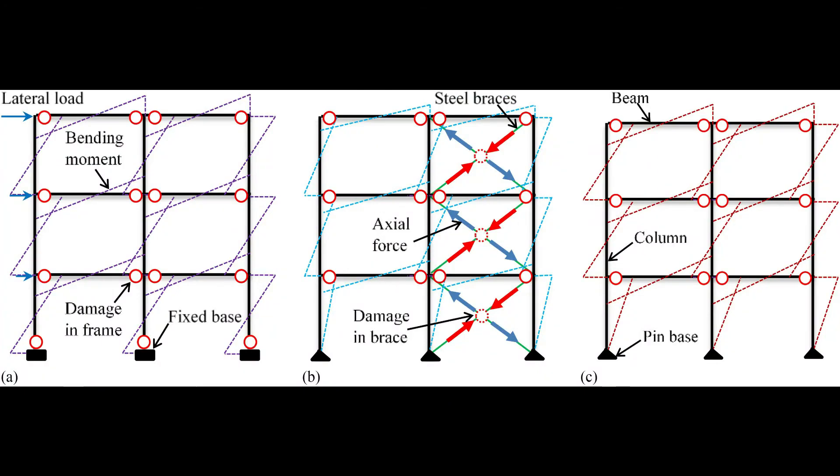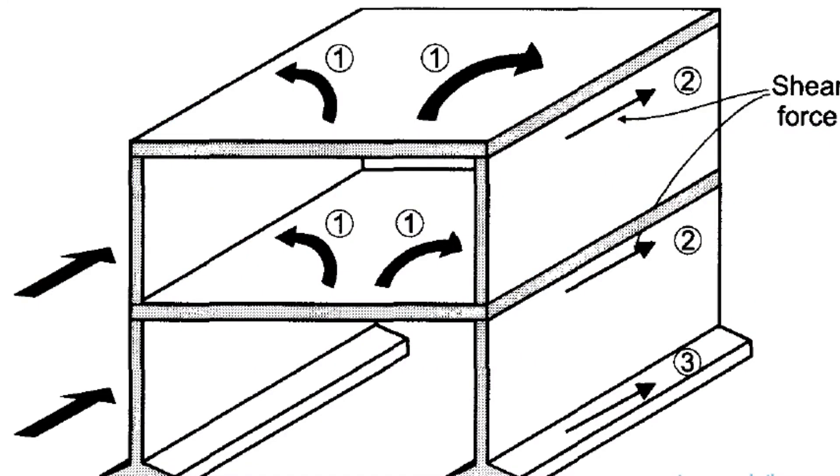The primary elements of a lateral load path are as follows. Vertical components which are in the path are shear walls and frames. And then the horizontal components in the path are roof, floors, and foundations.